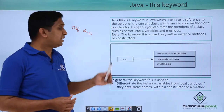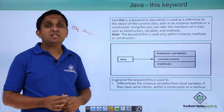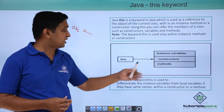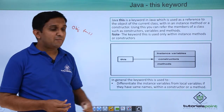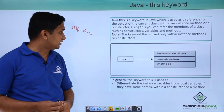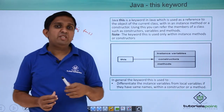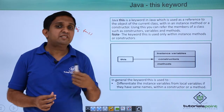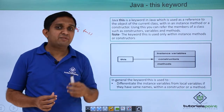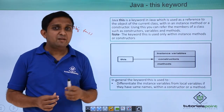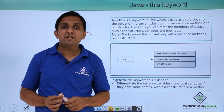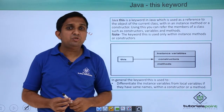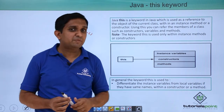Using 'this' I can refer to the instance variables of the class, and I can refer to the constructors or methods of the class. We do not need to use the 'this' keyword or this reference explicitly, but there are a few exceptional cases where we need to use it explicitly.